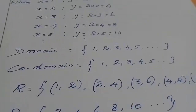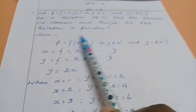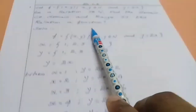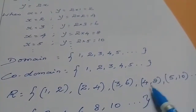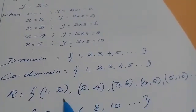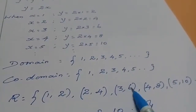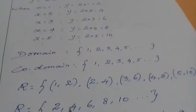The set of first elements is the domain. Now, is this relation a function or not? Here 1, 2, 3, 4, 5 are natural numbers mapping to 2, 4, 6, 8, 10, which are also natural numbers. Therefore, the relation is a function.